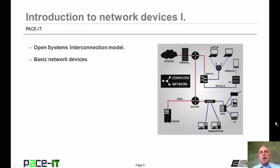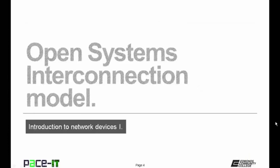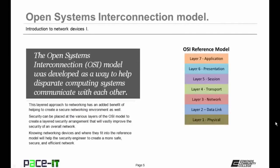There's a fair amount of ground to cover, but not a whole lot of time, so let's go ahead and begin this session. I'm going to begin by talking about the Open Systems Interconnection Model. The OSI model was developed as a way to help disparate computing systems communicate with each other. It created a seven-layer approach to networking. This layered approach not only allows those disparate systems to communicate with each other, but it has the added benefit of helping to create a secure networking environment as well.